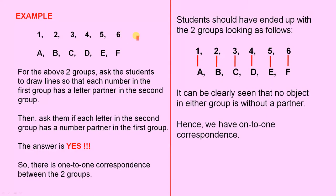Here's another example. Here's the first group with the numbers one to six, the next group, the letters A to F. For the above two groups, ask the students to draw lines so that each number in the first group has a letter partner in the second group.